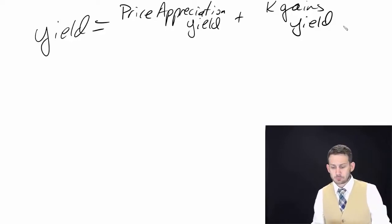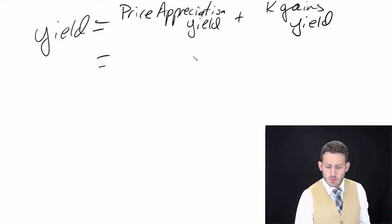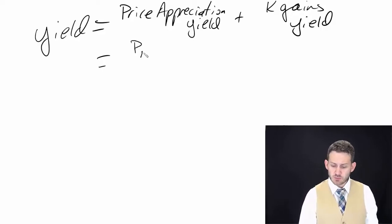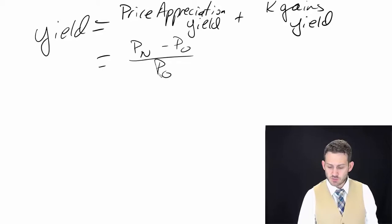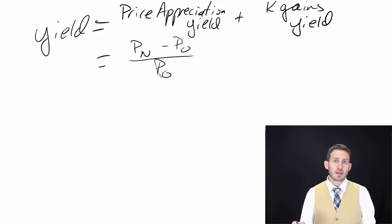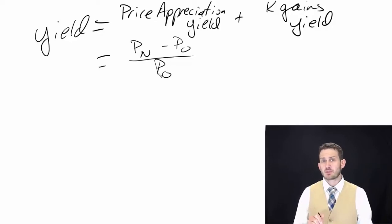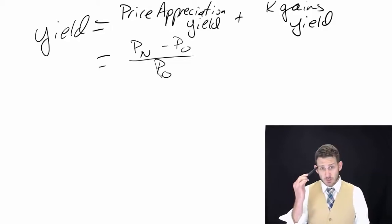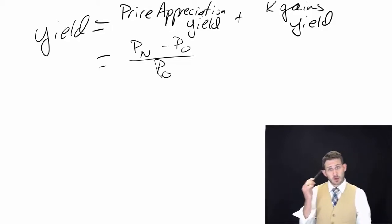The way we calculate price appreciation yield is: the new price minus the old price divided by the old price. The little ditty I use to remember this is 'new minus old over old.' Let me repeat it with me: new minus old over old, new minus old over old. That should be just in your brain right up here.